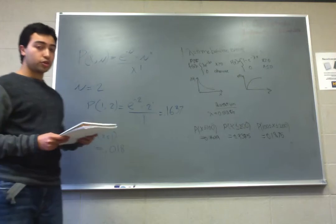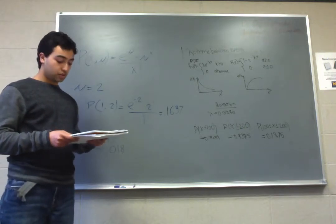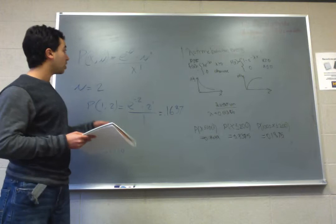For the Poisson distribution, the expected value is equal to the variance, and both of these are mu.